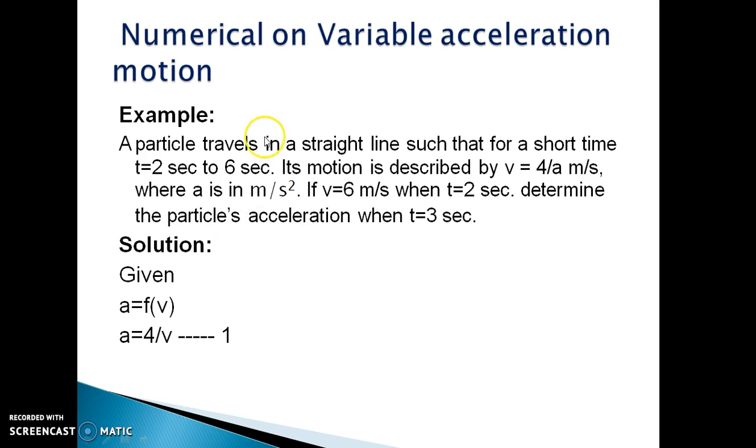A particle travels in a straight line such that for a short time, t = 2 seconds to 6 seconds, its motion is described by V = 4/A, 6 meter per second, where A is in meter per second square.